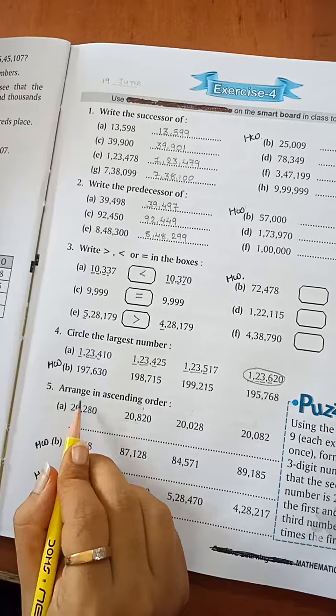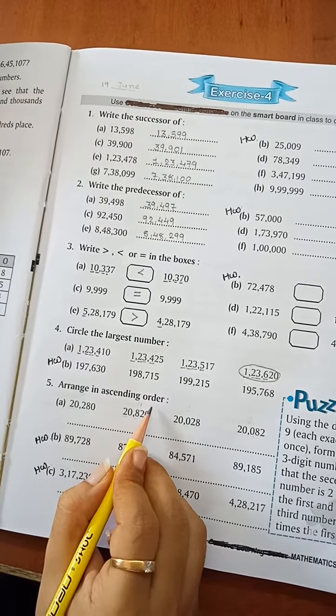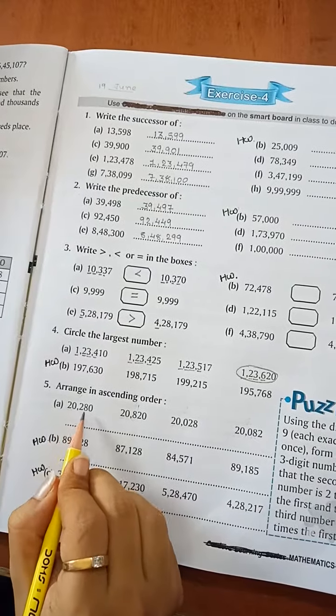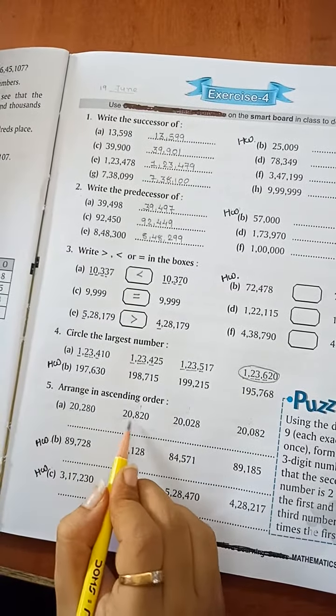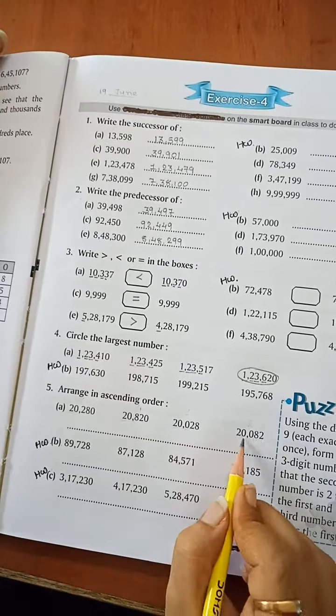Question number 5. Arrange in ascending order. Ascending order means smaller to bigger. 20,280, 20,820, 20,028, 20,080.